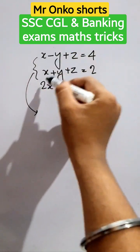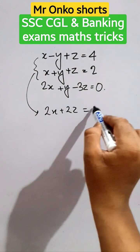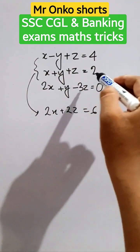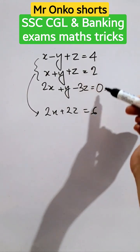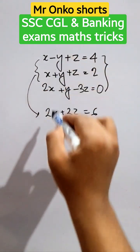We get 2x and 2z; y is eliminated. So 2x plus 2z equals 6. Now observe the first and third equations. If we add them, y will be gone.